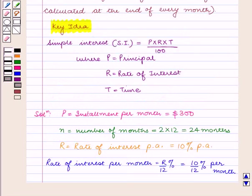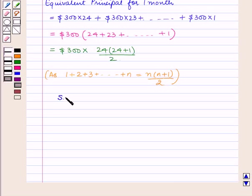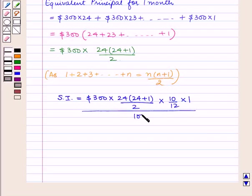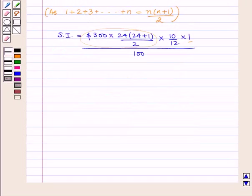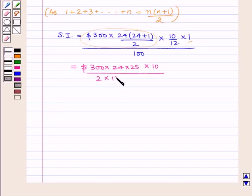To calculate the interest for a recurring deposit, we use the formula: simple interest equals P into R into T upon 100. So simple interest equals 300 into 24 into 24 plus 1 upon 2, into 10 by 12, into 1 upon 100. Here, 300 into 24 into 25 by 2 is the principal for one month, 10 by 12 is the rate of interest per month, and time is 1 month. This equals 300 into 24 into 25 into 10 upon 2 into 12 into 100.